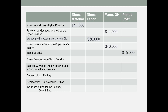Sales salaries are a period cost relating to selling and administration. Sales commissions are a period cost. Salaries and wages for the administrative staff are a period cost. Depreciation on the factory relates to production but is an overhead cost. Depreciation on selling and administrative offices is a period cost. For insurance, because it is partially for the factory and partially for selling and administrative facilities, we break it up: $800 is manufacturing overhead and $200 is a period cost.